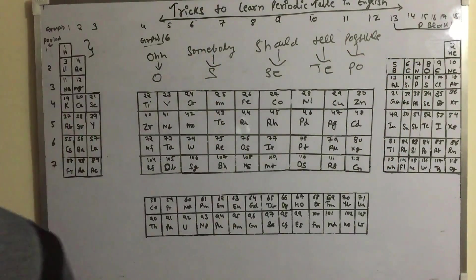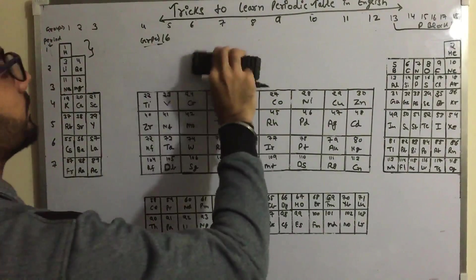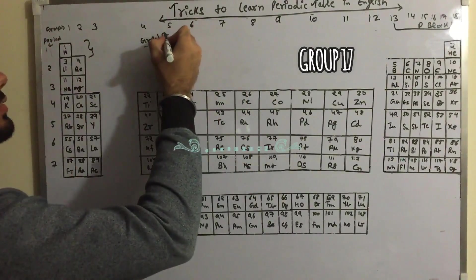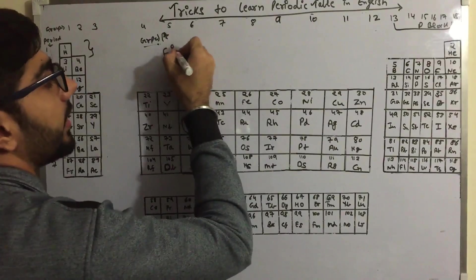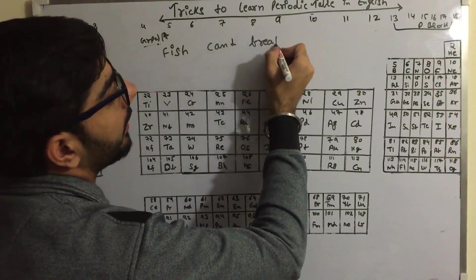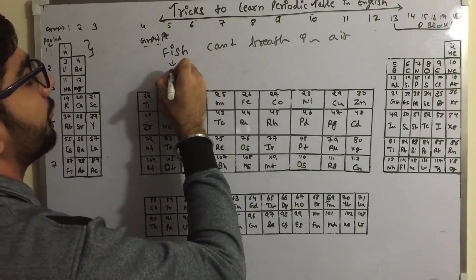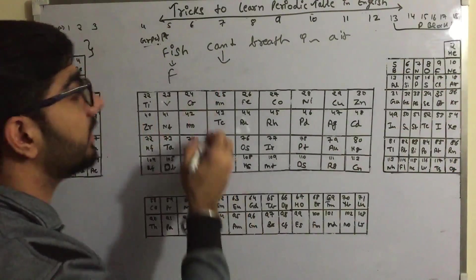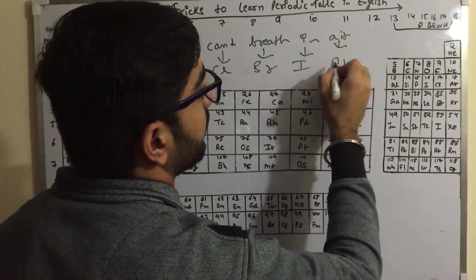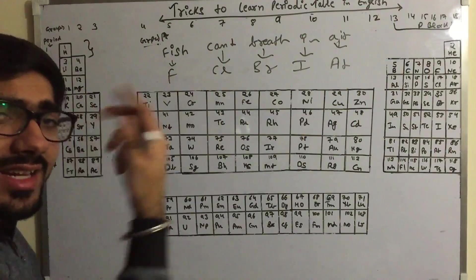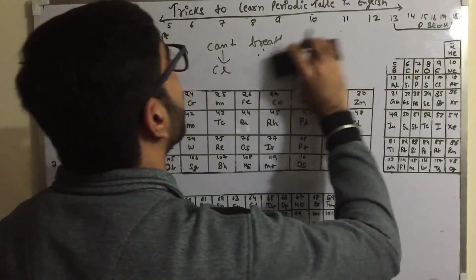Now Group 17. The mnemonic is: 'Fish can't breathe in air.' 'Fish' means Fluorine, 'can't' means Chlorine, 'breathe' means Bromine, 'in' means Iodine, and 'air' means Astatine. This is a very easy trick for Group 17 — fish can't breathe in air.